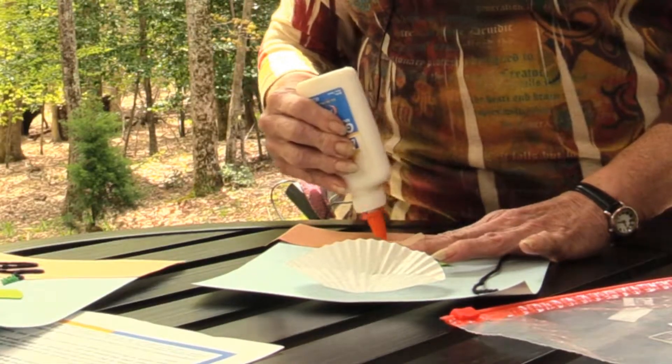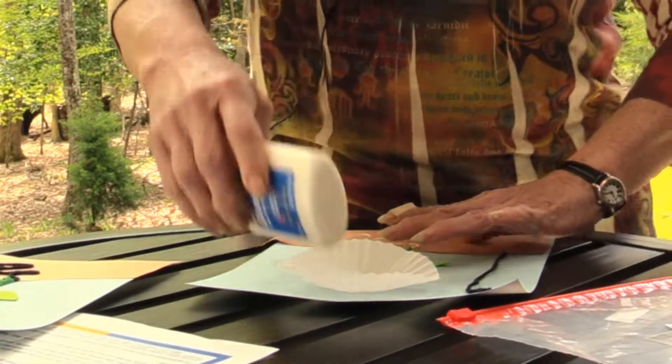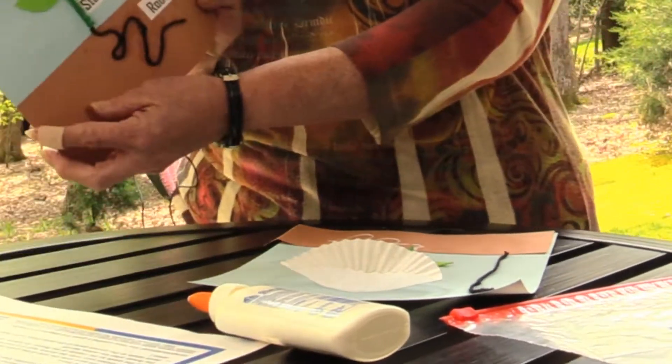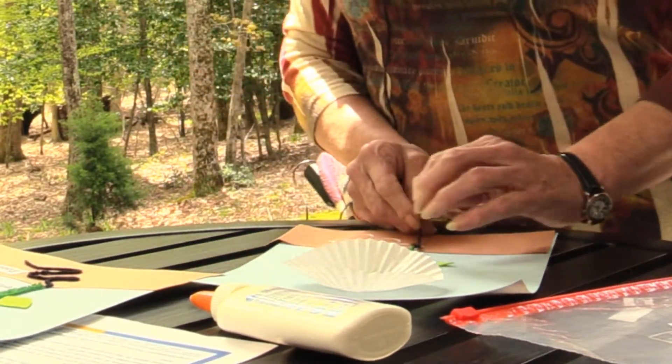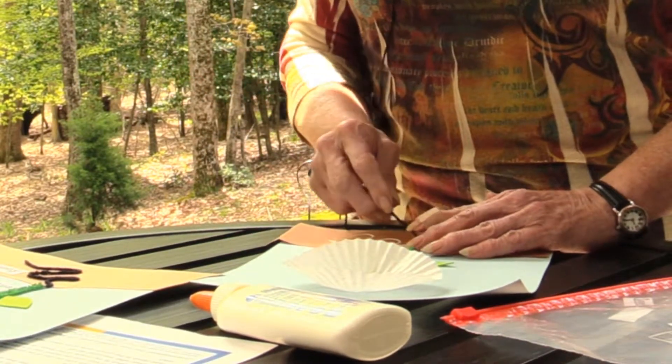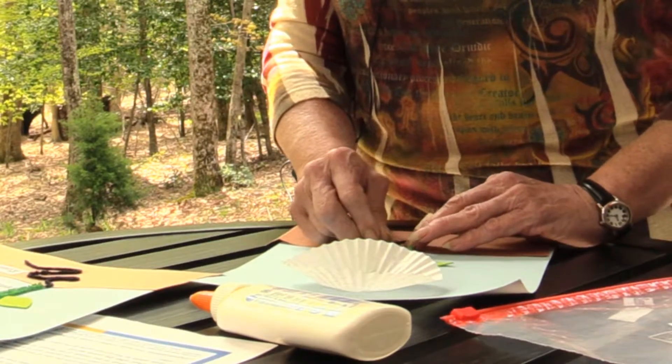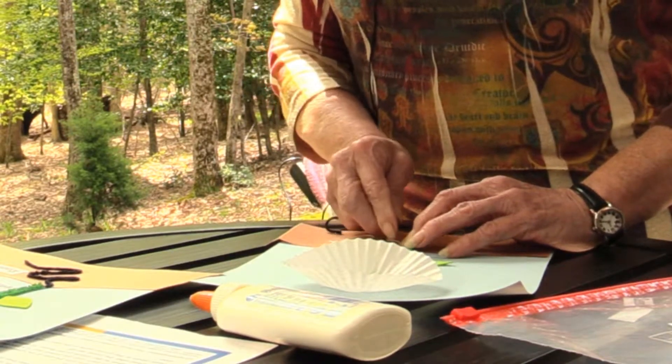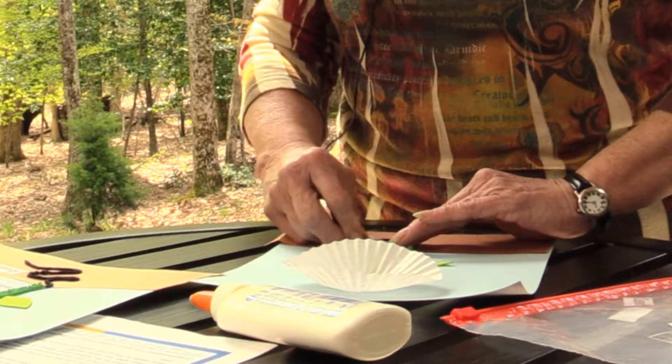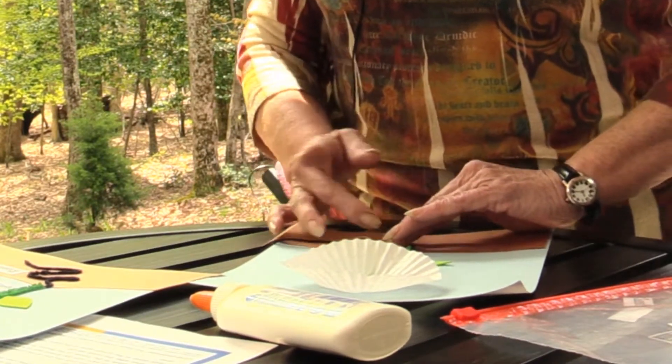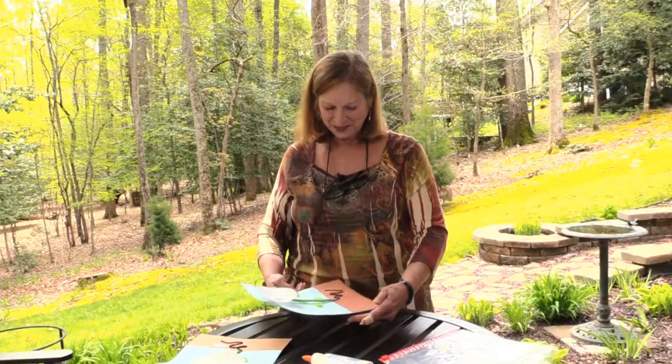But we are going to just make a little squiggly line whatever you think a root system would look like. And then let's place our black yarn right over our glue pattern. And again press this down. Now we have roots.